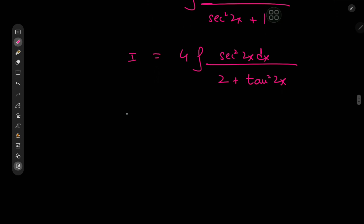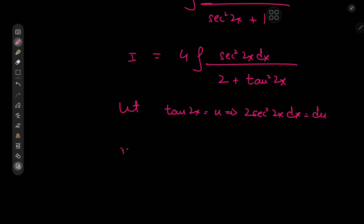All we need now is a substitution: let u = tan(2x), which implies 2·sec²(2x) dx = du. So I becomes twice the integral of du divided by 2 plus u².